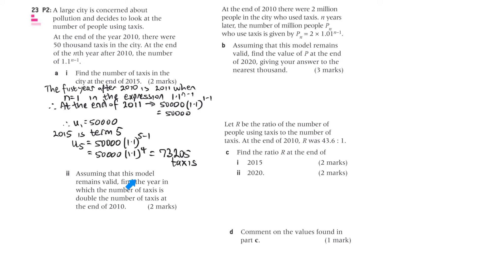Part 2. Assuming that this model remains valid, find the year in which the number of taxis is double the number of taxis at the end of 2010. Okay, so when it's doubled, it's going to be 100,000 taxis. So 100,000 equals 50,000 times 1.1 to the power of n minus 1. Can we resolve that to that? It's a bit easier to put into the calculator. When we use GDC Solve, we get n equals 8.27254. Therefore, when n equals 9, the year would be 2019.